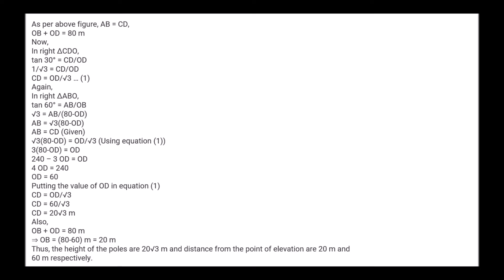In right triangle ABO: tan 60° = AB/(80 − OD), so √3(80 − OD) = OD/√3. Multiplying through: 3(80 − OD) = OD, so 240 − 3·OD = OD, giving OD = 60. Substituting in equation 1: CD = 20√3 meters. OB = 80 − 60 = 20 meters. The height of the poles is 20√3 meters and the distances from the point of elevation are 20 meters and 60 meters respectively.